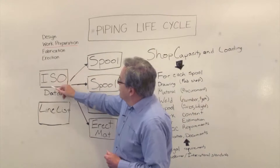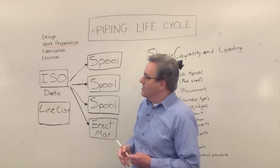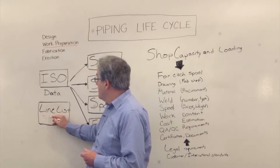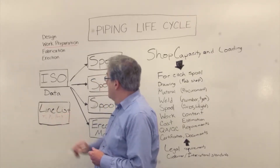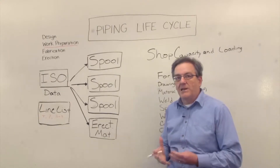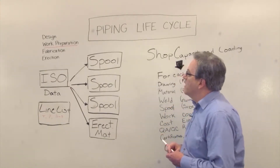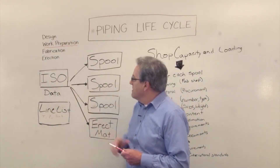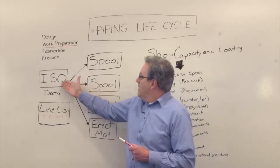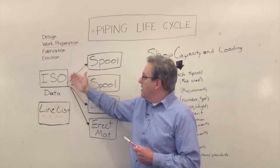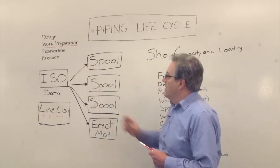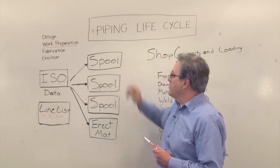We're going to start with the typical issued-for-construction piping isometric drawings and a line list. The line list gives us information on things like temperature, pressure, fluid, and a number of other important things. The work preparation step is really about planning for the actual physical fabrication of piping. I've written 'data' underneath the ISO because the important concept from the first talk is: don't just think of this as a piece of paper — think of it as data we originated in the 3D piping design system. We're going to use that data, add value to it, and derive more information from it.